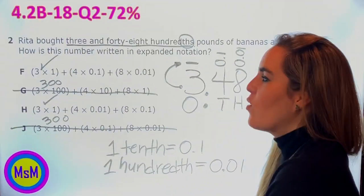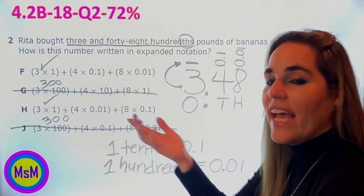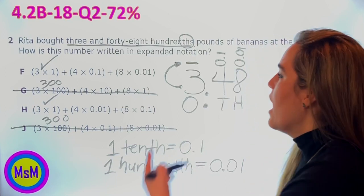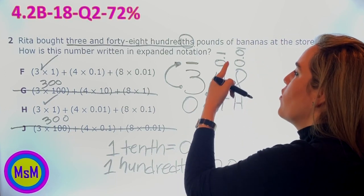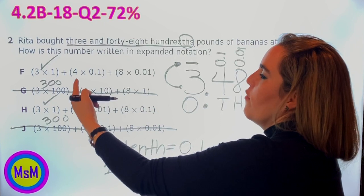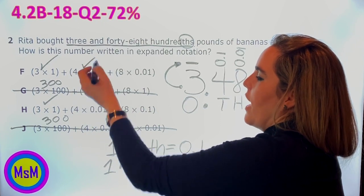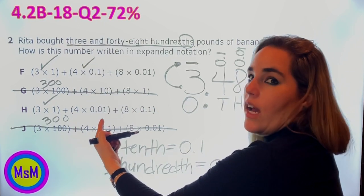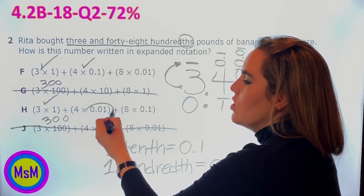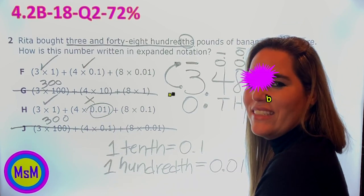As simple as that, we only have F and H as a possible answer. Let's keep going. Four groups of one tenth, 4 times 0.1. Oh, 100. What do we say? No.